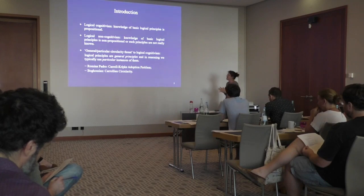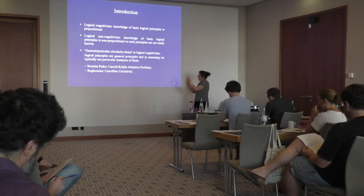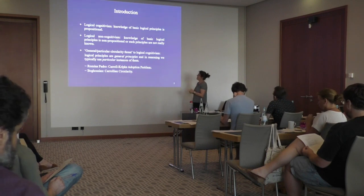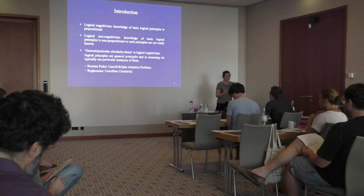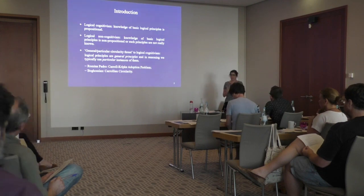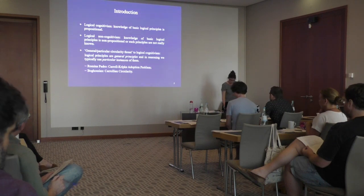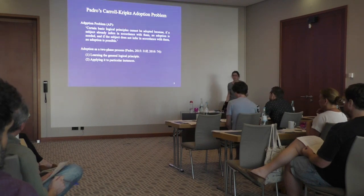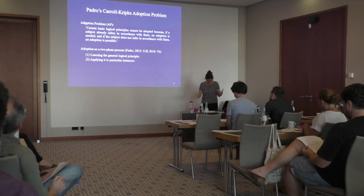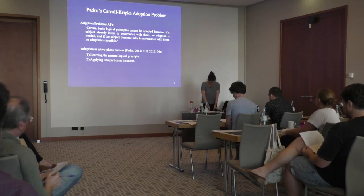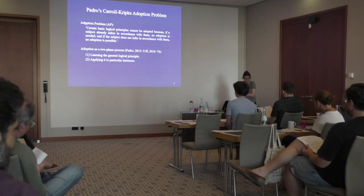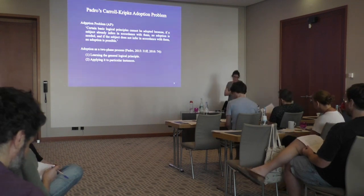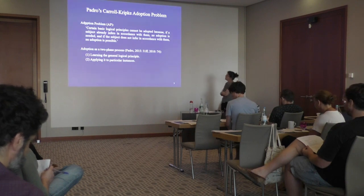What I want to do in the talk is consider these two versions of the threat and tell you why actually this threat can be diffused and there isn't really a problem there. You have a handout — you don't really need it, but it's nice to hold something. So, the first is the adoption problem.